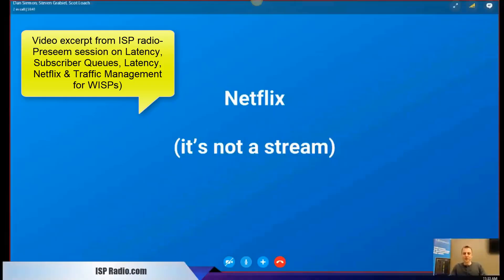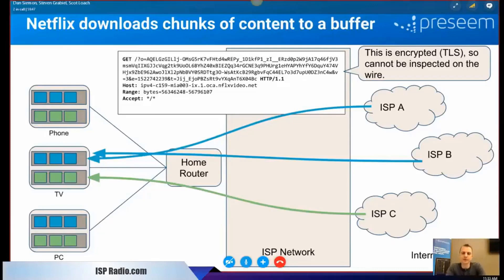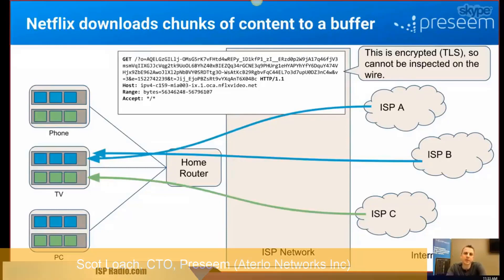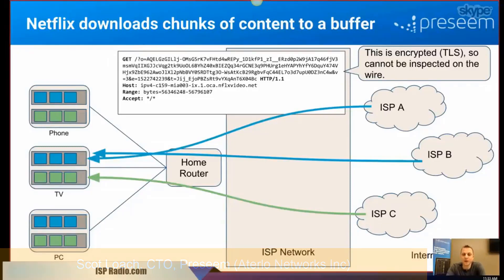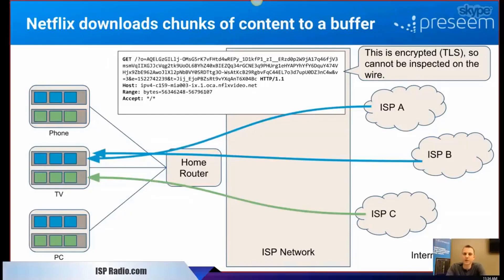Let's talk about Netflix. So why do we want to talk about Netflix? A couple of reasons. Number one, Netflix is by far the most popular application on the internet. About a third of traffic on a typical ISP network is Netflix — one out of three bytes flowing through the network. Our previous product before Perseem was completely related to managing Netflix traffic on networks, so we probably have the most knowledge outside of Netflix on how this stuff works.